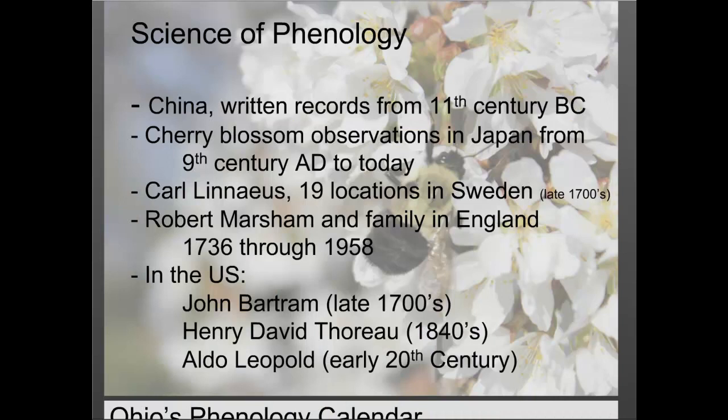China actually has the oldest written records of phenology from the 11th century B.C. In Japan, cherry blossom bloom observations have been happening since the 9th century A.D. and continue today. Carl Linnaeus was a big fan of phenology — he studied the occurrences of spring in 19 different locations in Sweden in the late 1700s. He and Robert Marsham share the title of fathers of phenology. Marsham was an English landowner who noted natural occurrences on his farm for years, and after his death his family kept up observations all the way through 1958. In the U.S., we have traditions from John Bartram in Philadelphia, Henry David Thoreau at Walden Pond, and more recently Aldo Leopold.